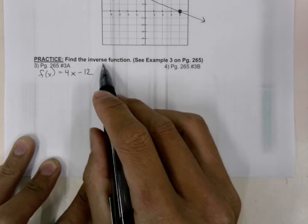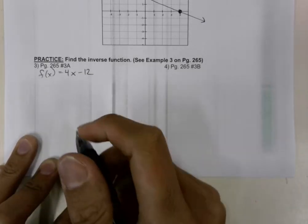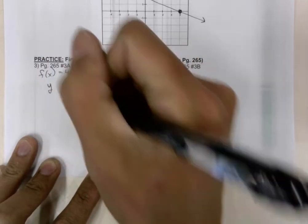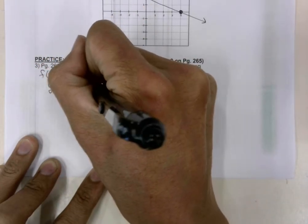And the first step to finding the inverse function is to replace the f of x with y. So we'll get y is equal to 4x minus 12.